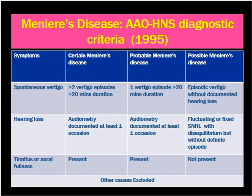The American Academy of Otolaryngology and Head and Neck Surgery gave diagnostic criteria for Meniere's disease in 1995. Certain Meniere's disease (100% sure) requires more than two spontaneous episodes of vertigo of more than 20 minutes' duration, audiometrically documented hearing loss on at least one occasion, tinnitus, and other causes excluded. Probable Meniere's disease requires only one such vertigo episode of more than 20 minutes, audiometrically documented hearing loss on at least one occasion, and tinnitus present.